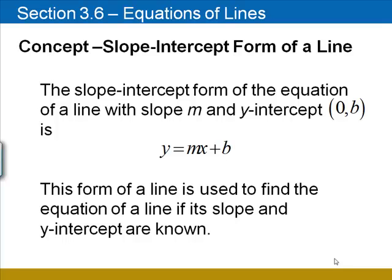The slope-intercept form of the equation of a line with slope m and y-intercept (0, b) is y equals mx plus b. This form of a line is used to find the equation of a line if its slope and y-intercept are known.